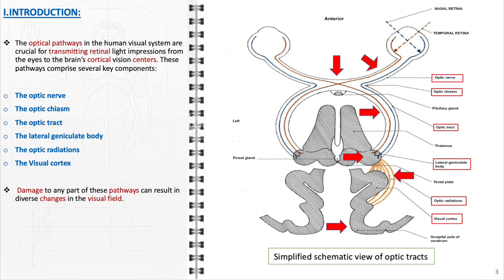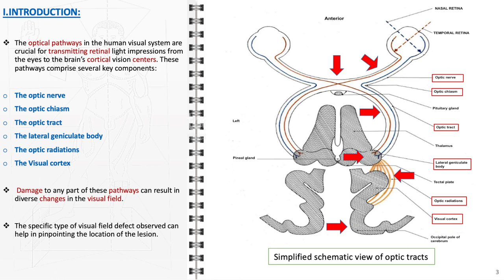Damage to any of these components can lead to specific alterations in vision, manifesting as changes in the visual field. For example, lesions in the optic nerve may result in blindness in one eye, while damage to the optic chiasm can cause loss of peripheral vision. Lesions in the optic tract, lateral geniculate body, or optic radiations lead to characteristic patterns of visual field loss. Thus, the nature of the visual field defect can be a critical clue in localizing and diagnosing lesions within these pathways.